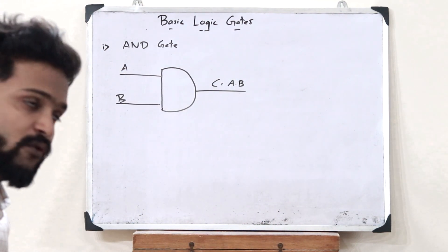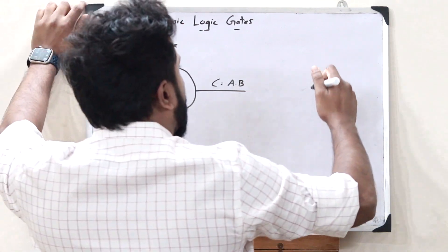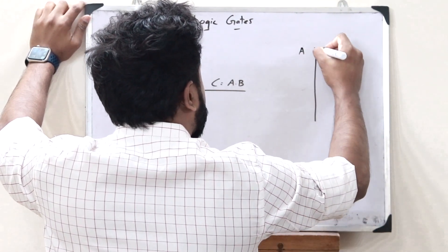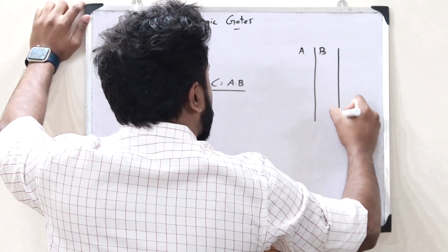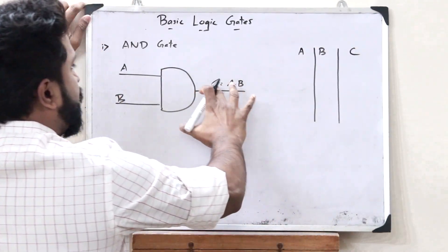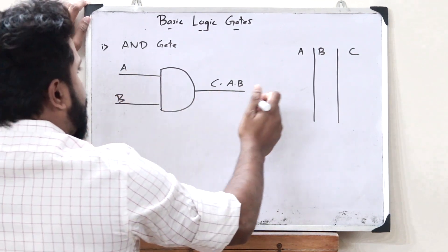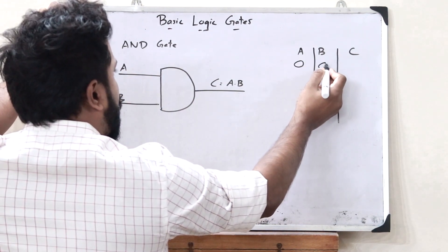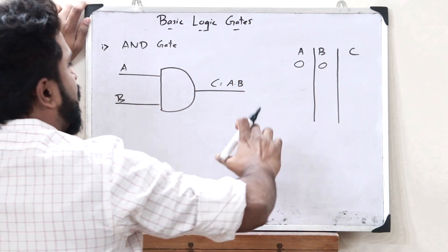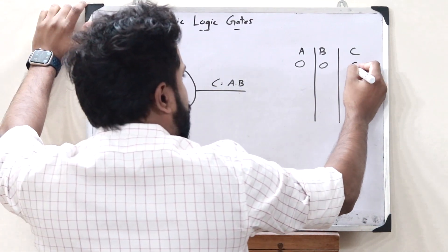This is what we refer to as an AND gate. Let us now draw the truth table of an AND gate. Here we have two inputs A and B and the output C. First, let us assume that both inputs are zero — the output C is equal to 0 dot 0, which is zero.